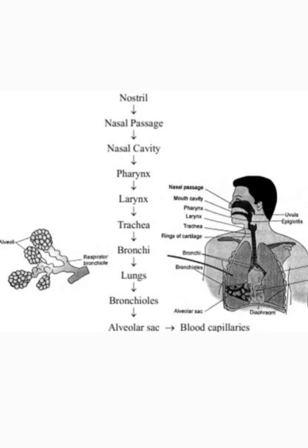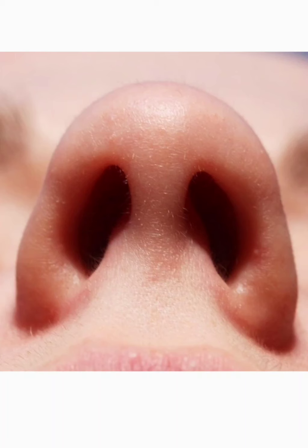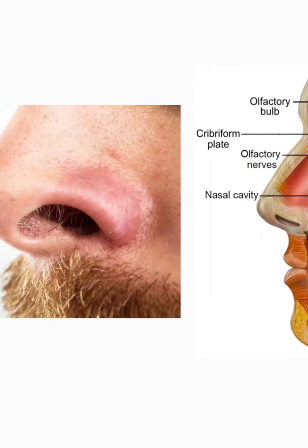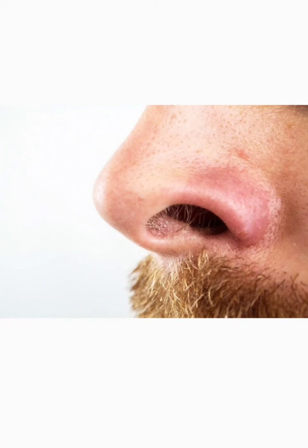Nostrils are the openings through which air enters into the nasal cavity. In the nasal cavity, the air gets filtered and its temperature is brought close to body temperature. Water vapor is also added into the air so that the air can get moist before entering into the lungs. Dust particles coming along with the air are prevented from entering the lungs by the hair and lining of the nasal cavity. The hair present inside the nasal cavity are also called the sweepers of the nasal cavity.